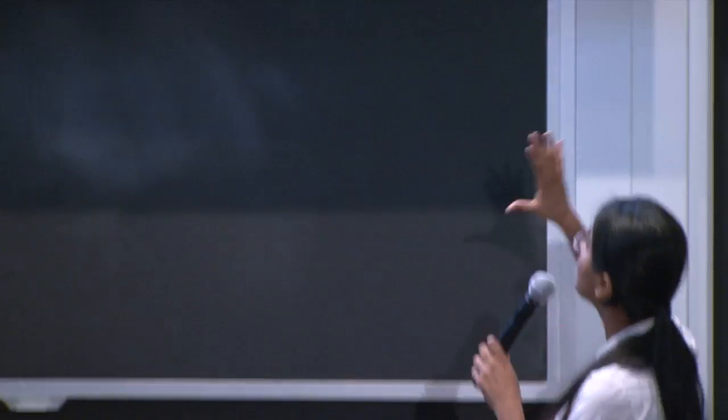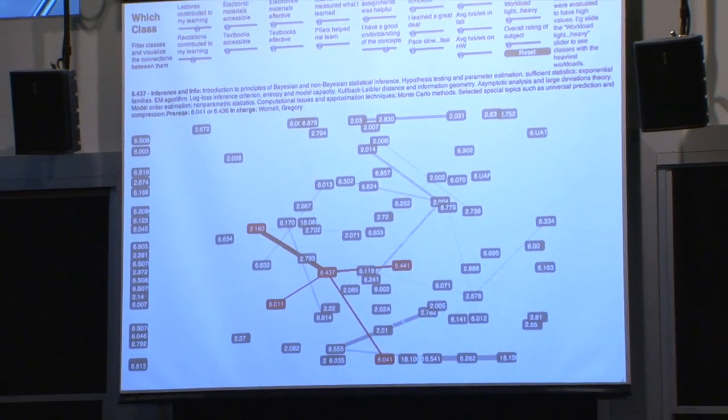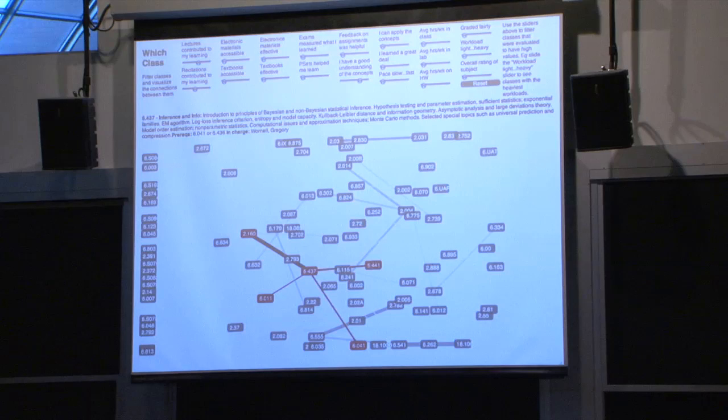WhichClass lets you visualize connections between classes and identify a cluster of classes related to the thing you're interested in. The second big problem is finding classes that match what you personally care about, not what your friends care about. There's a herd mentality among students — I've taken classes my friends loved and hated them, because the things I care about are not the things they care about. MIT has great subject evaluations that professors like Professor White encourage students to fill out in detail every semester, but this information just sits there and nobody ever uses it.